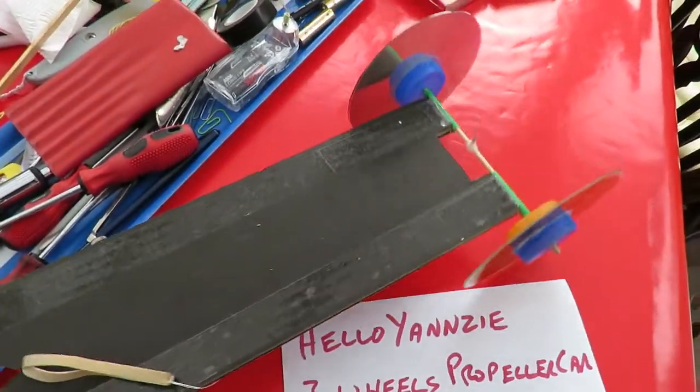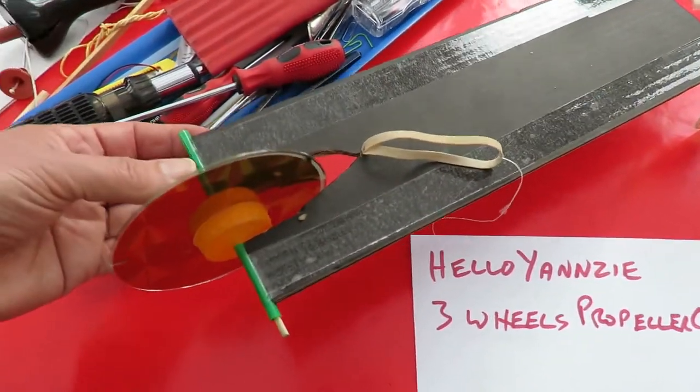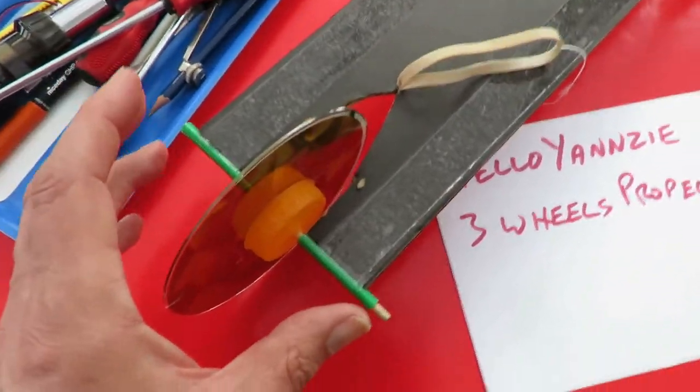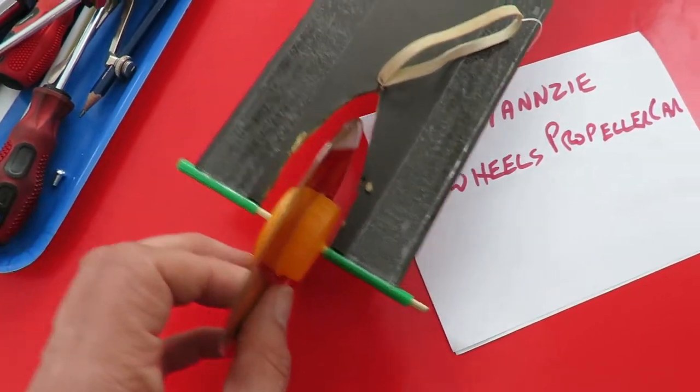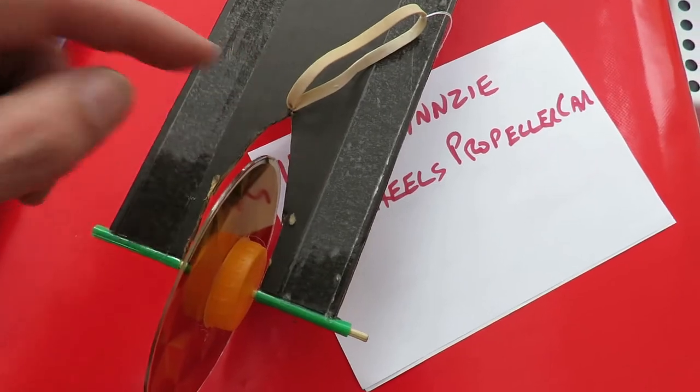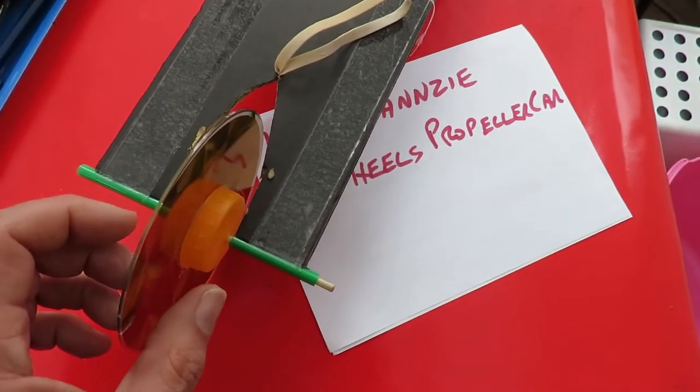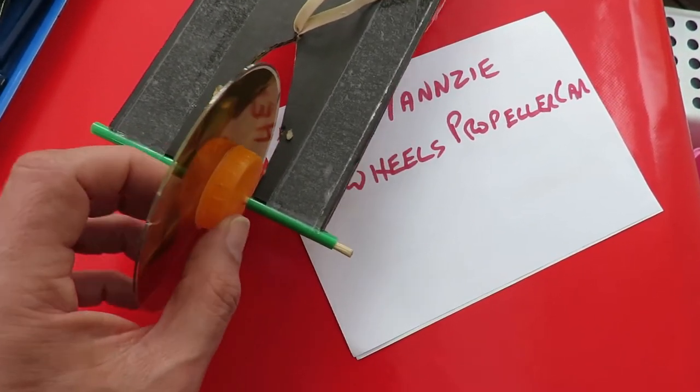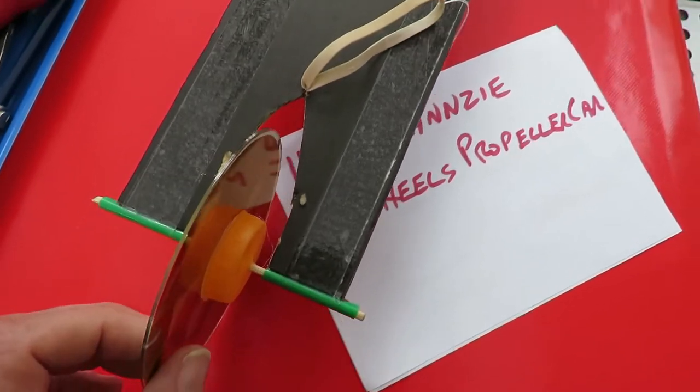First of all I've got one of my ordinary rubber band powered cars here which did have two wheels on the front, so all I've done is cut a slot out the middle, thrown away one of the wheels and put the other wheel in the middle.